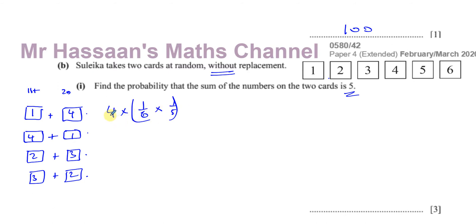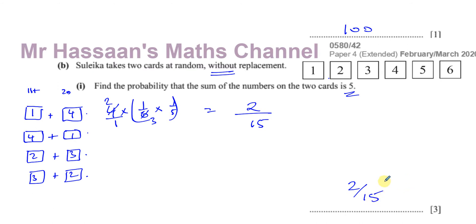You're going to add together the probability for all four cases, giving you four times one over six times one over five. Don't make the mistake of multiplying numerator and denominator by four — it's four over one times one over six times one over five. The four and the six cancel, leaving two and three, so the numerator is two and the denominator is 15. The answer is two out of 15.